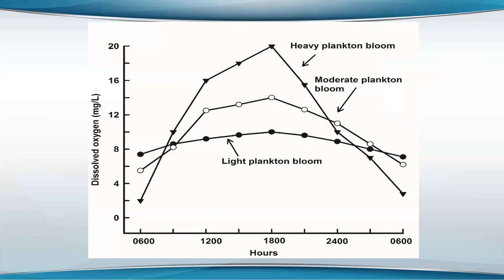In a pond, the more plankton you've got in the water, the more dissolved oxygen you have in the daytime, but the lower the dissolved oxygen goes at night. As the plankton bloom increases or as the waste load in the pond increases, you have a greater rate of photosynthesis, but you also have a greater rate of respiration. The oxygen demands go very low in the morning when there's a lot of waste or a lot of plankton in the pond.